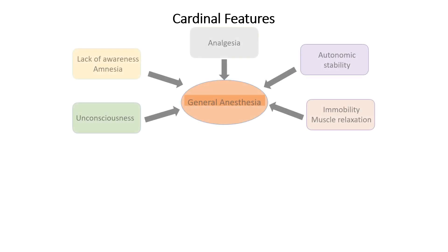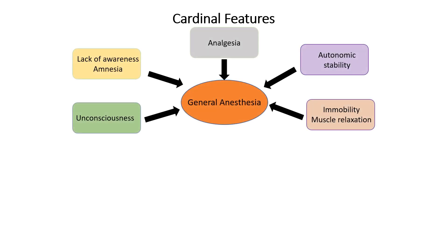The key features of general anesthesia include several essential components. Unconsciousness refers to a reversible loss of awareness and the inability to respond to stimuli. Amnesia ensures that the patient does not recall the surgical or procedural experience. Analgesia provides an absence of pain perception during the procedure. Immobility suppresses motor responses to noxious stimuli, allowing the patient to remain still during surgery. Finally, autonomic stability involves maintaining stable physiological functions, such as heart rate and blood pressure, often with the help of adjunct drugs.